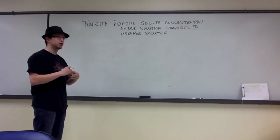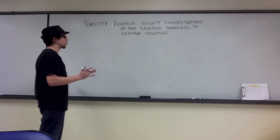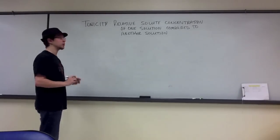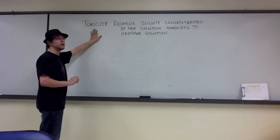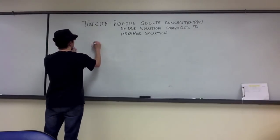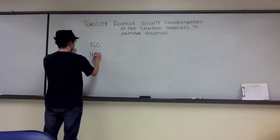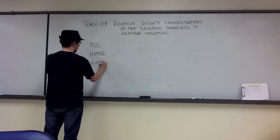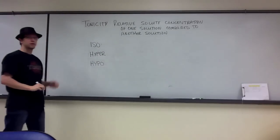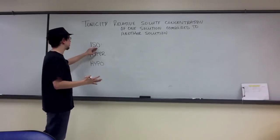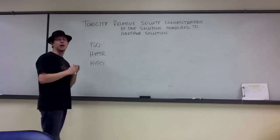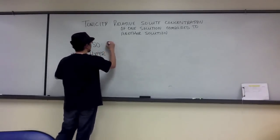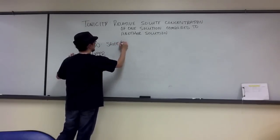Some students think it's just a relative term that refers to all solutions, but we're comparing one solution to another. There are three prefixes you're going to encounter when talking about tonicity: iso, hyper, and hypo. Iso — you hopefully have seen this prefix previously when talking about isotopes or isomers.